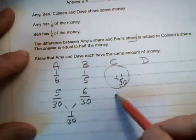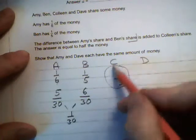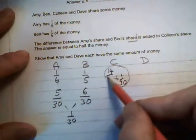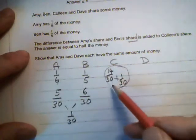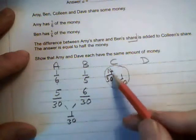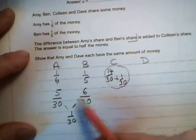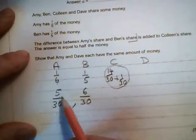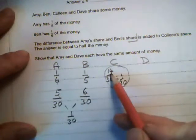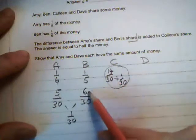Half the money would be 15 thirtieths. So she must have had 14 thirtieths to start—14 thirtieths, 6 thirtieths, and 5 thirtieths to start. So if you look at 5, 6, and 14, that's what they had to start. That makes 25.